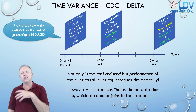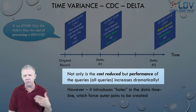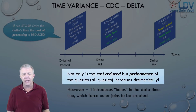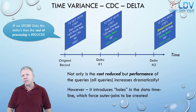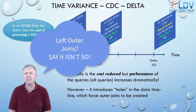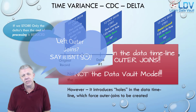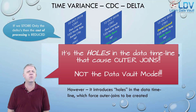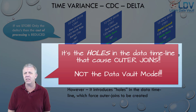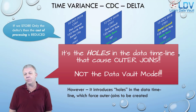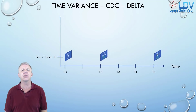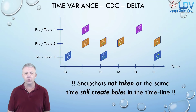If we only store the deltas themselves, we can reduce the cost of processing, reduce overhead on the infrastructure, and hopefully increase performance. When you do delta processing, you end up issuing left outer joins to get the data out again because there are holes in the timeline. This is not a function of the Data Vault model — it has everything to do with timeline or time-driven data. If we had a database engine that managed temporal data properly, this feature would be embedded and available to queries without the dreaded left outer join.